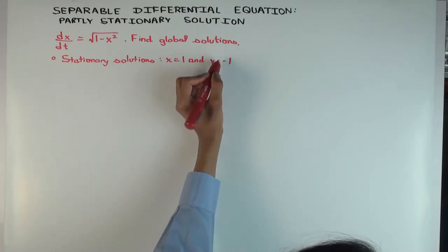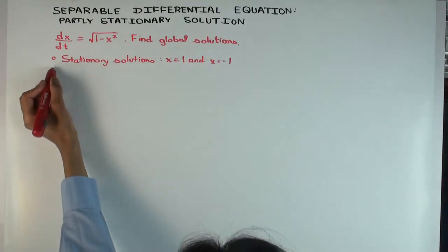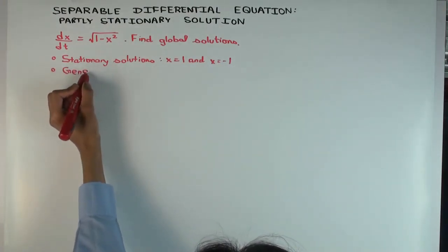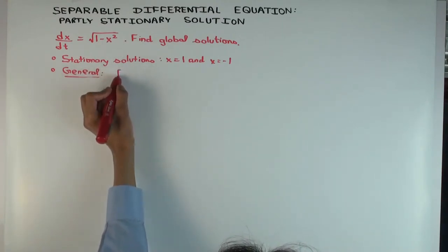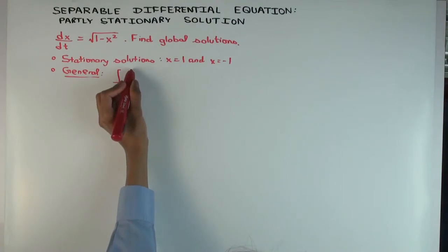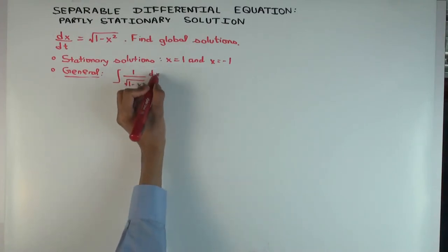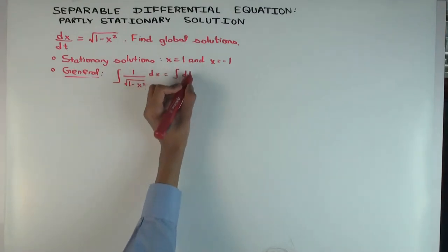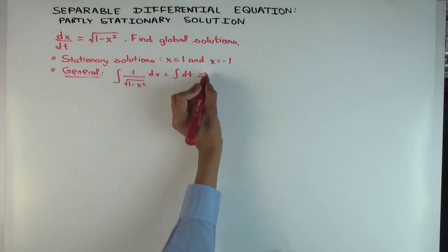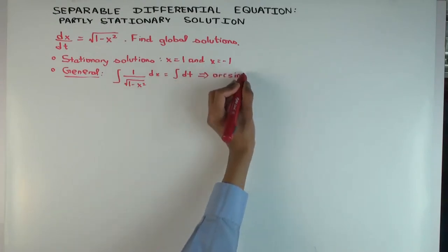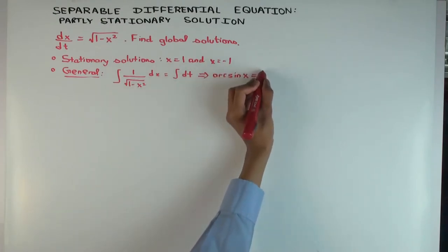Now let's try to find the general solution, the one you do by separation. So general solution. So you rearrange, what do you get? Integral 1 over √(1 - x²) dx = integral dt. So when you integrate, what's the integral of this side?